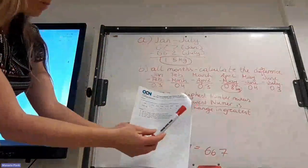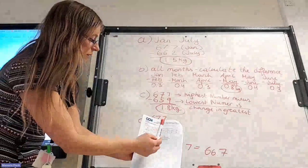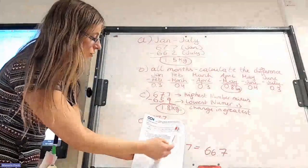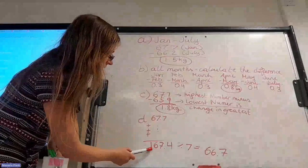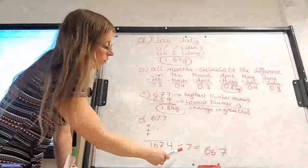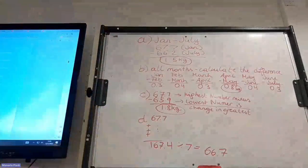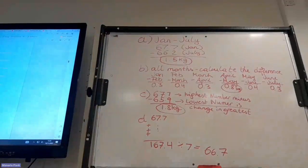First of all, we have to add them all up. So we add January plus February plus March, April, May, June, and so on. So we add them all together and we get 167.4. Then we divide it by seven and we get 66.7. And that was question number one.